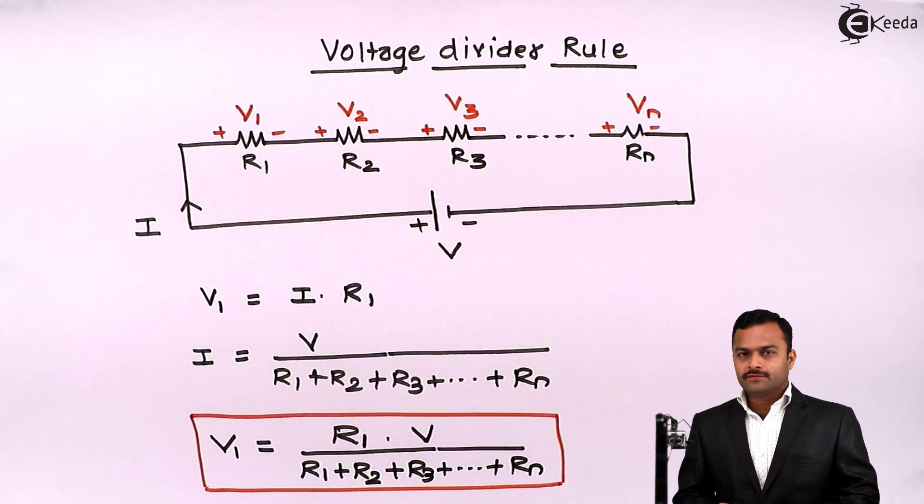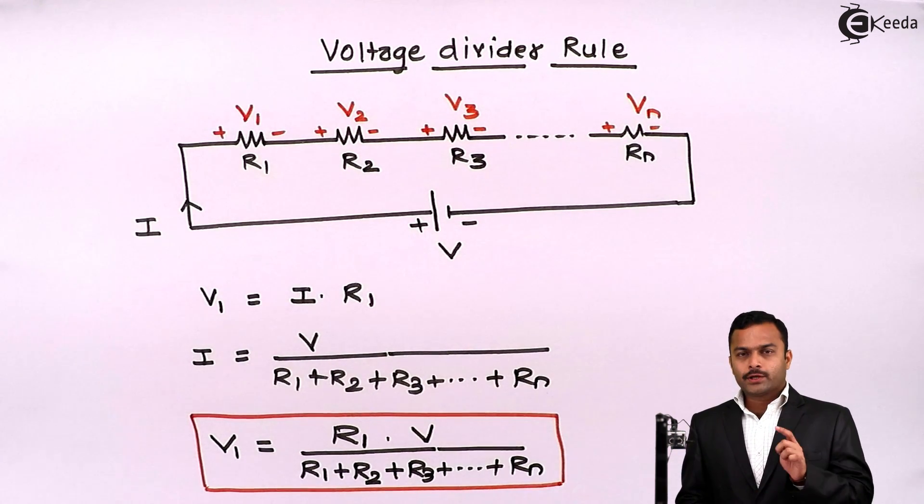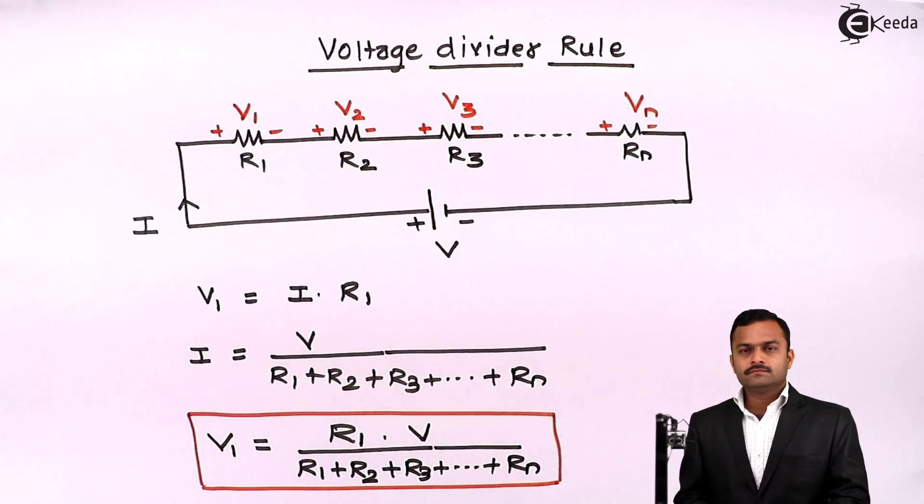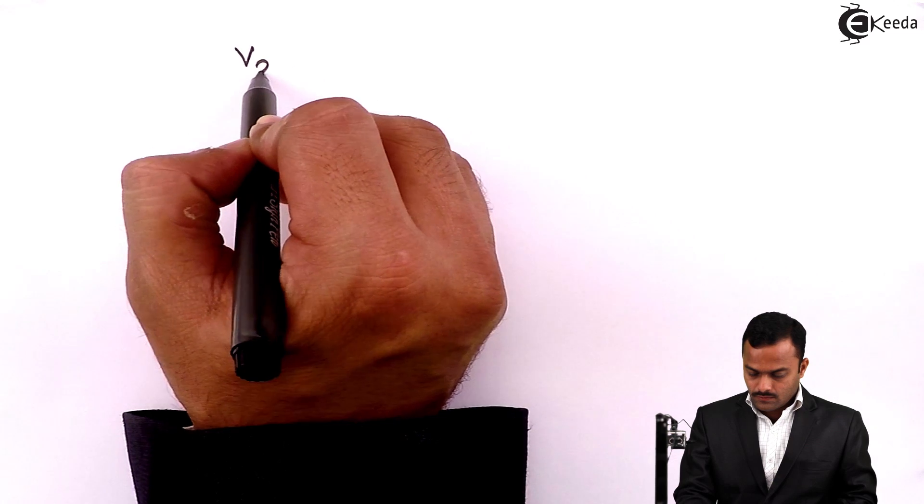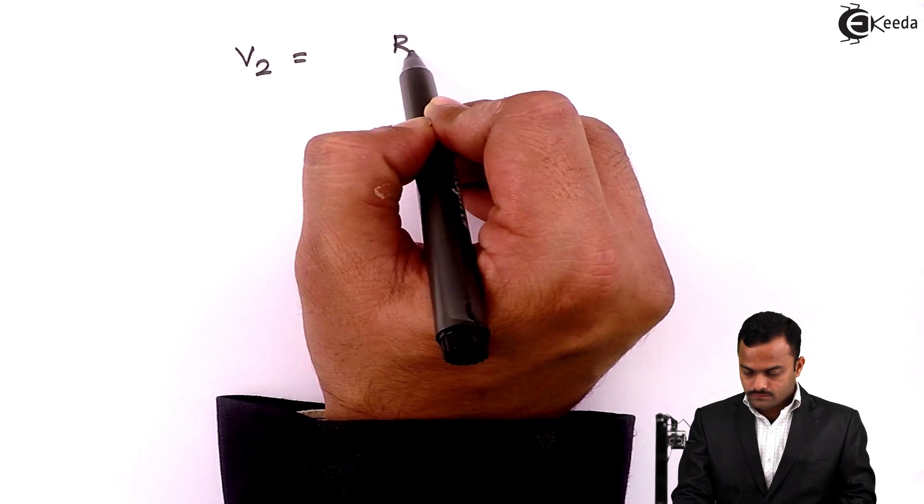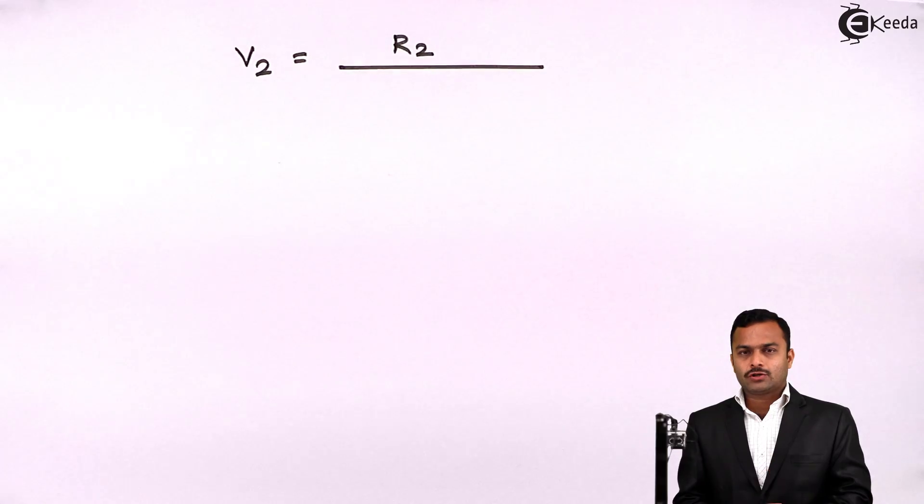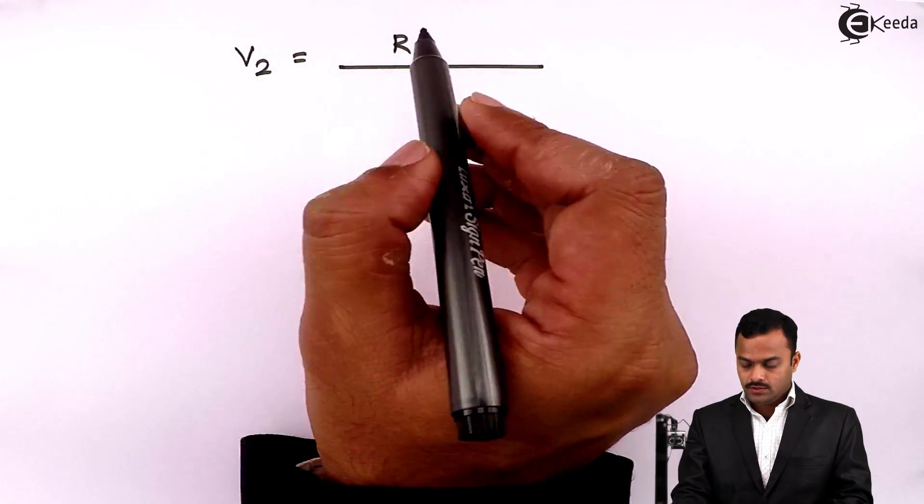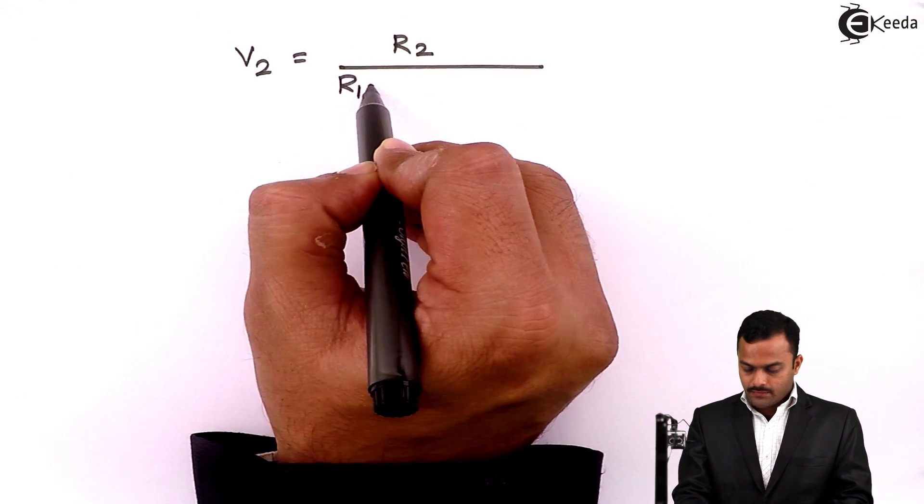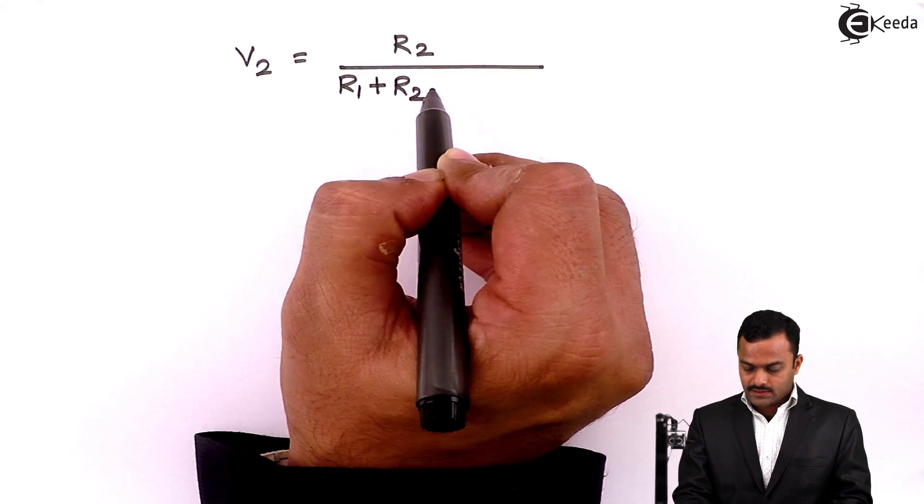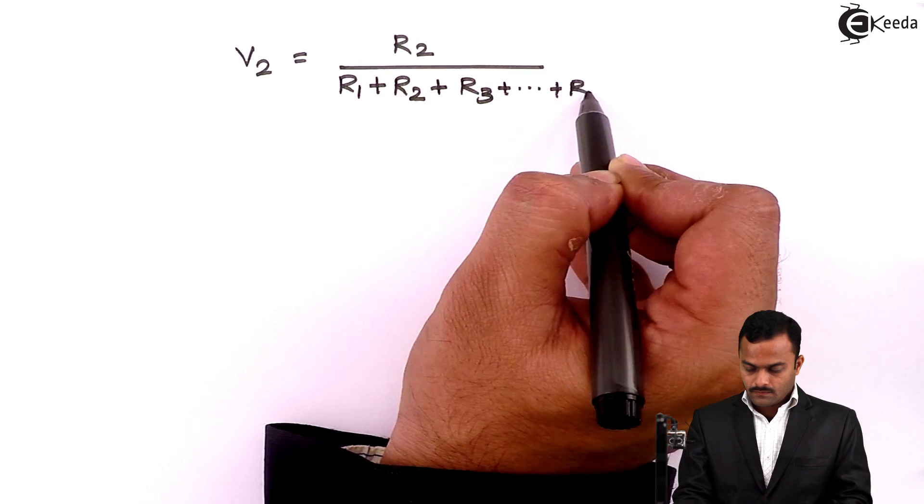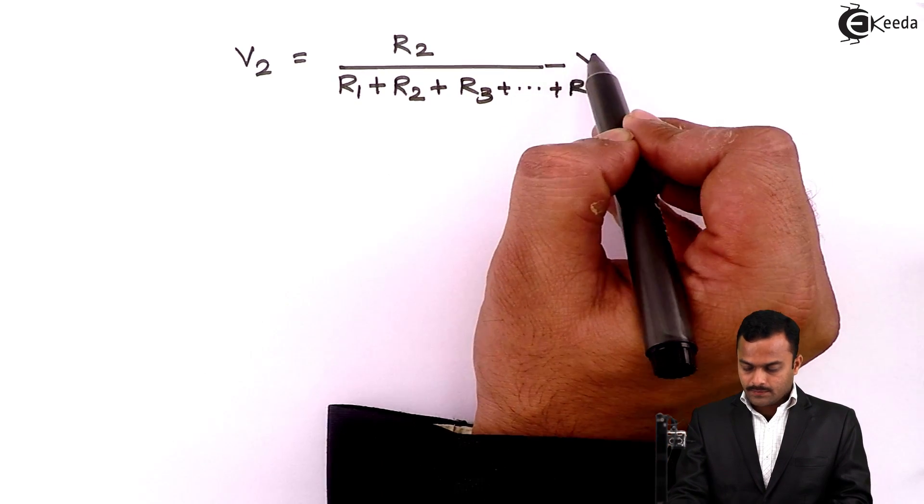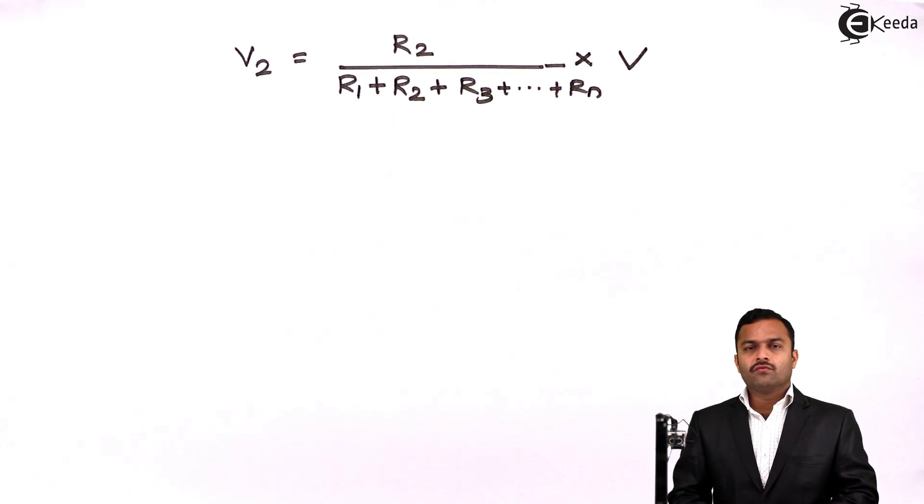Let's apply this logic for V2. V2 is a voltage across R2. So I can say V2 equal to R2, because I want the voltage across R2, hence R2 divided by summation of all the resistances in series, multiplied by supplied voltage V.